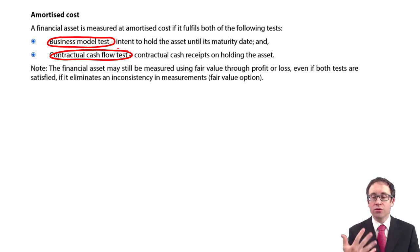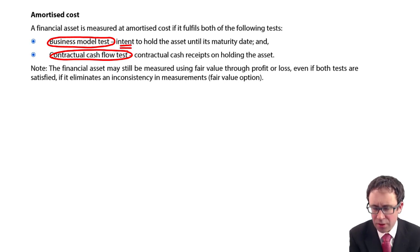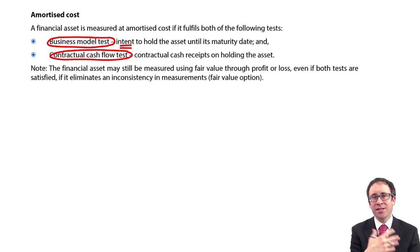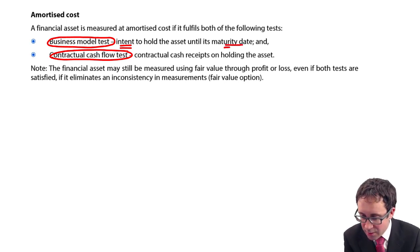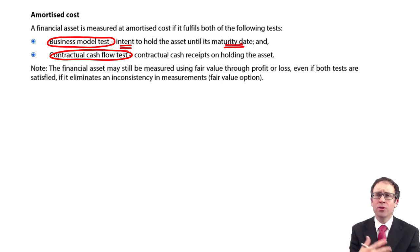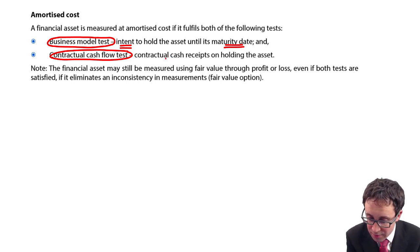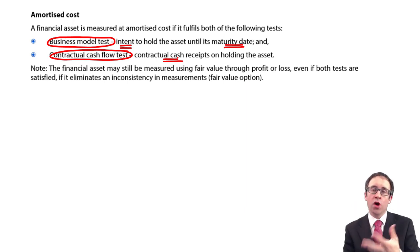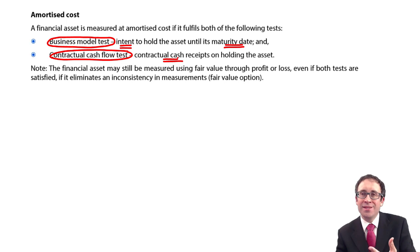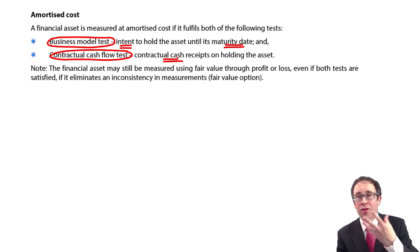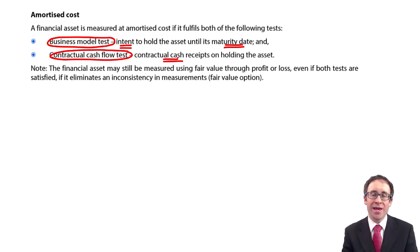The business model test looks at your intent: do you have this investment in debt with the intent to hold the asset until its maturity date, collecting all the contractual cash flows such as the coupon interest attached to the debt and the principal on redemption? As well as that, there also needs to be contractual cash flows within it — an obligation that you are going to receive cash. With investments in debt, that's highly likely, as you are buying that debt to get interest based upon the coupon rate and the par value over the life of the instrument.